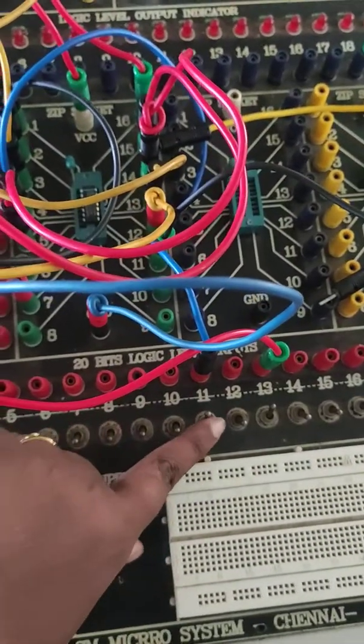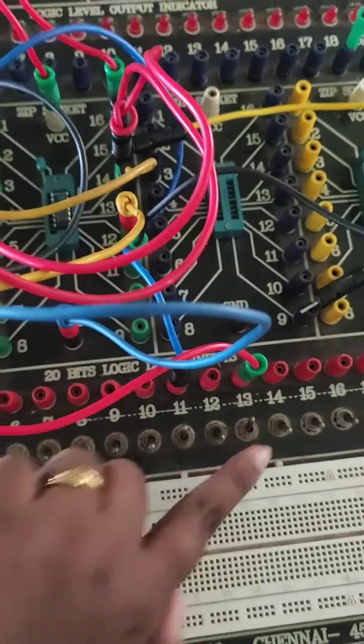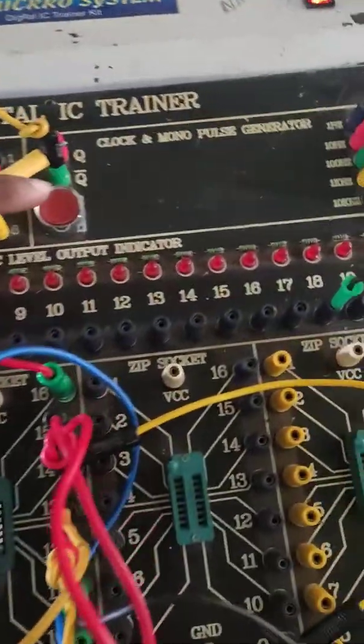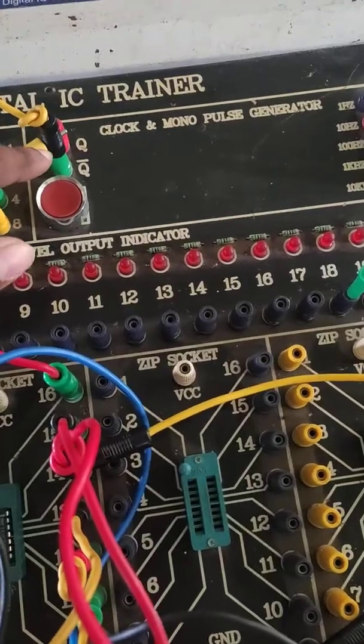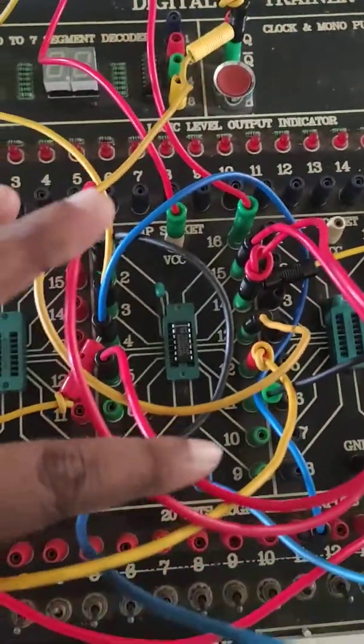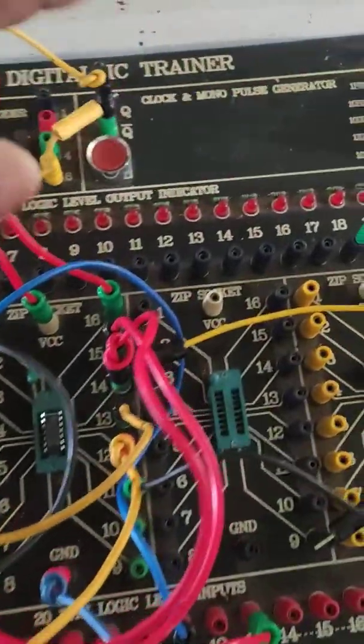This is the data switch, and this is the preset and clear switch. Initially, everything has been set to high. Here you can see this is the clock where it has been connected to Q bar, and this is the 7474 ICs, the connections that have been given.